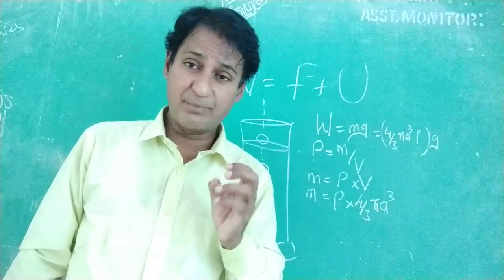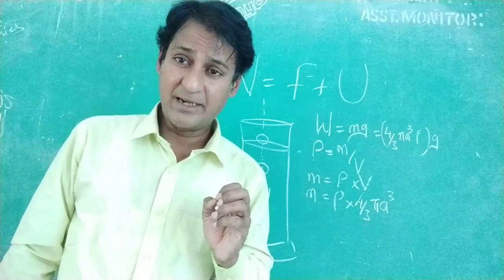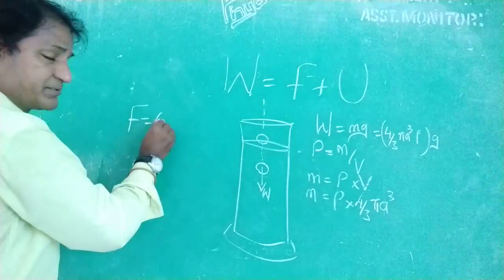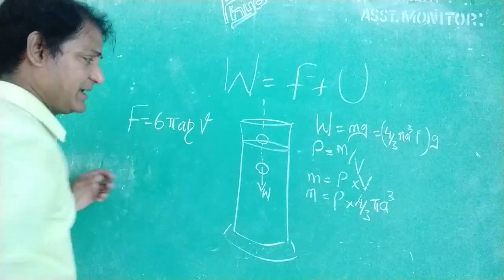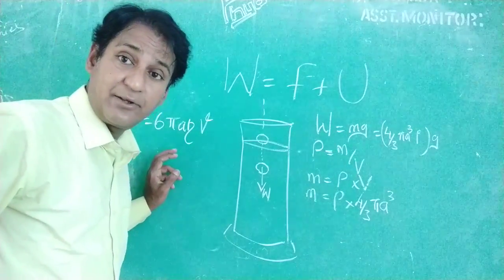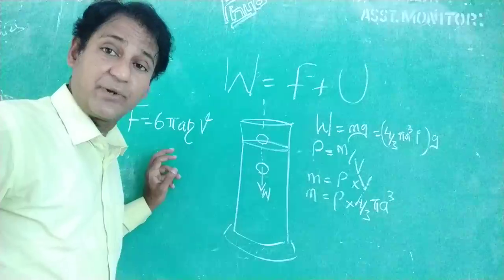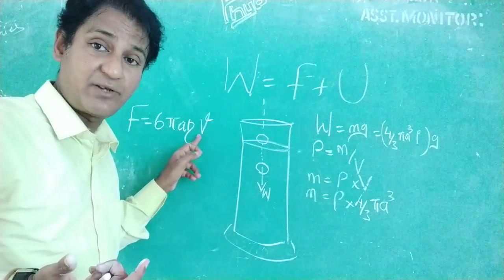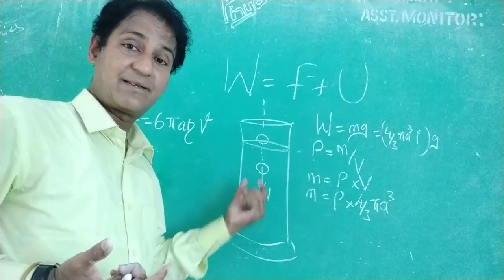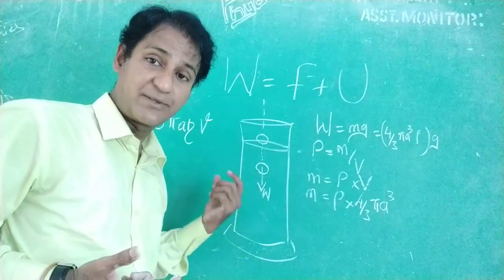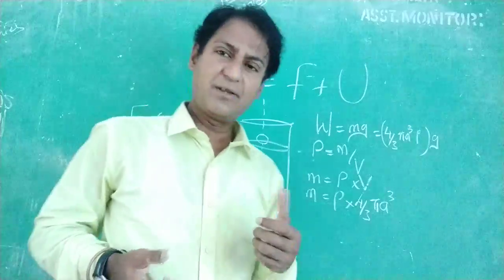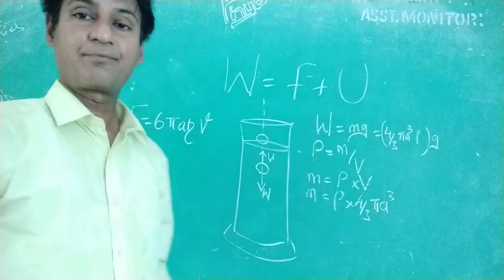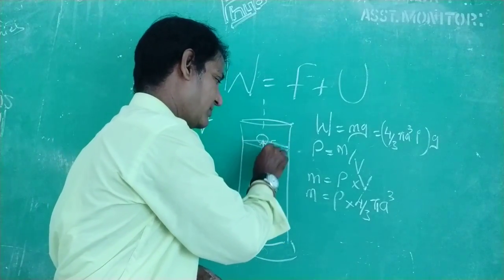So that is the viscous force offered by the highly viscous liquid. That viscous force is F, whose formula is 6 pi A eta V. Eta is called as the coefficient of viscosity. So it differs from liquid to liquid. And V is the terminal velocity with which the ball is moving, that is attained. This is U, this is also F.